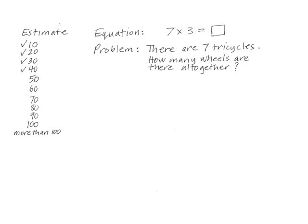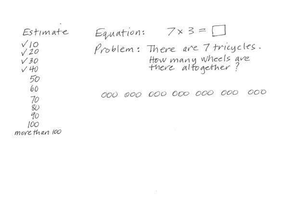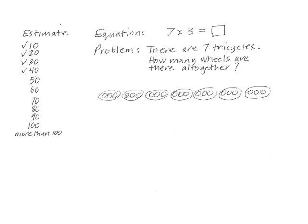I then used think, pair, share, and had the students talk with a partner to come up with ways to solve the problem. When I asked them to share their ideas, Amelia reported first. She suggested that I draw circles for the wheels and to do it seven times. I drew and then asked her, did I do what you were thinking? Yes, she said, but you can put a circle around each of the threes to show it better. I did this, and Amelia nodded. Now what? I asked.